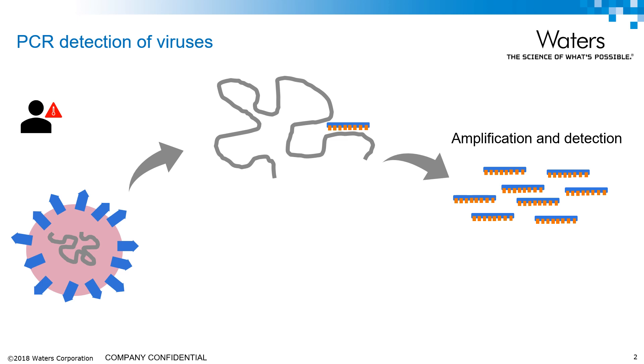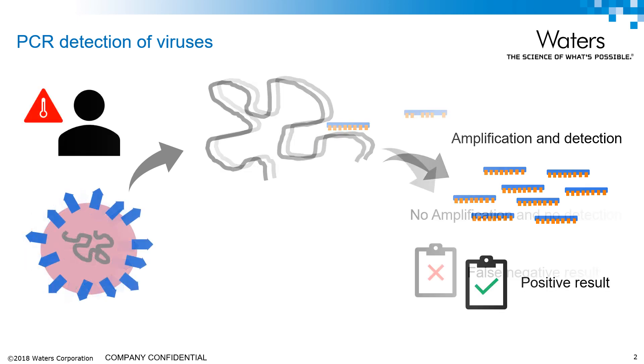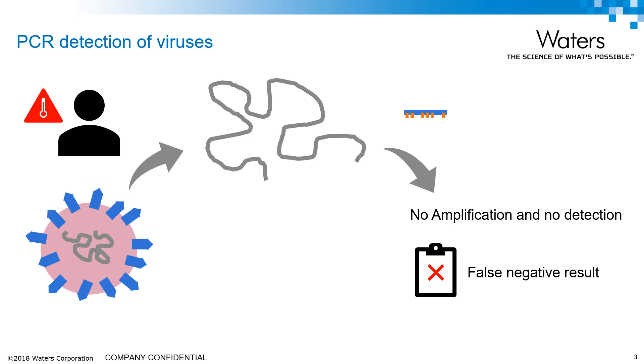If the gene is present and so the virus is present, we get a positive result. However, if there's a problem with the primer, the primer doesn't bind to the gene and we get no amplification and no detection. In these cases, if it was an infected patient, we get a false negative result.